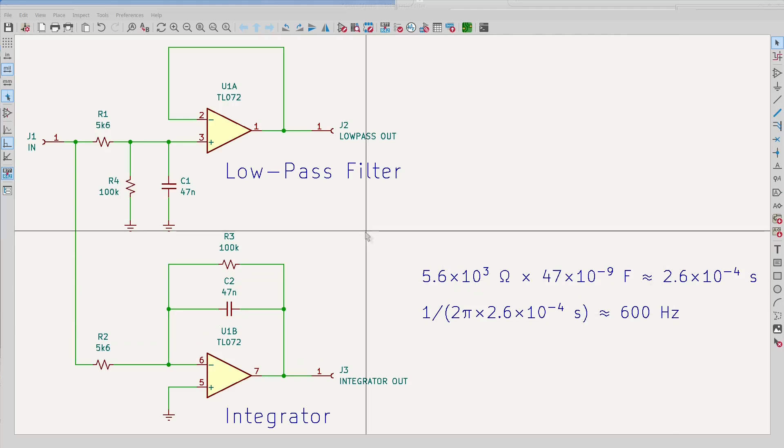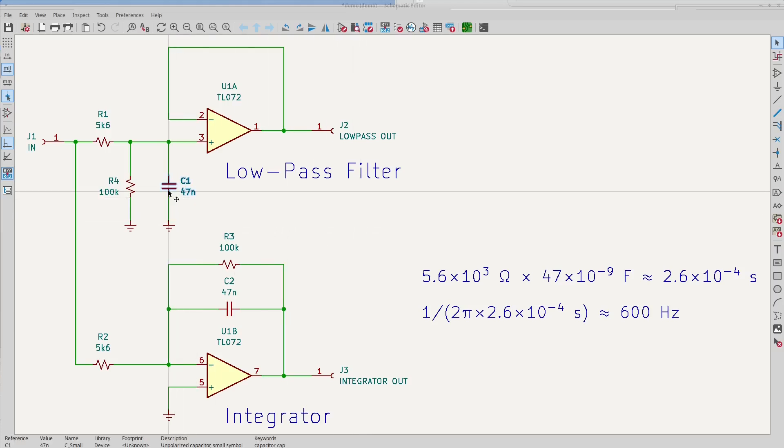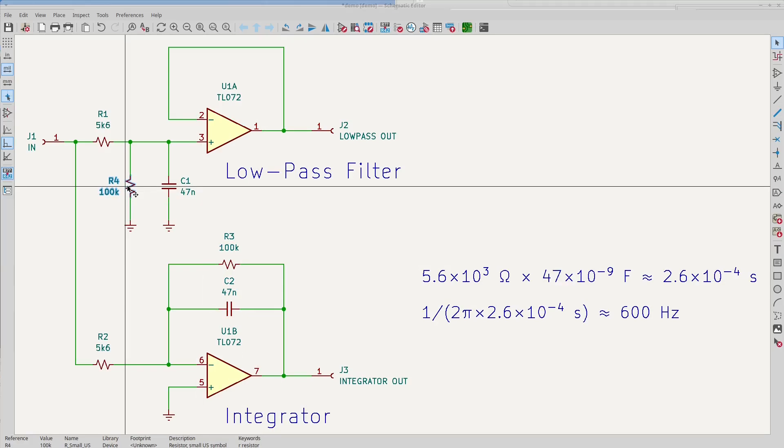As you can see in the schematic, the difference is that the filter has the capacitor to ground, while the integrator has the capacitor in the feedback loop. Both circuits have parallel resistors to provide a zero DC bias across the capacitor.